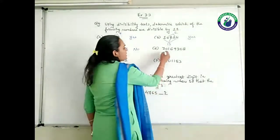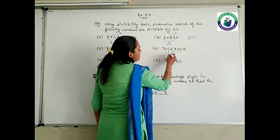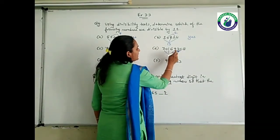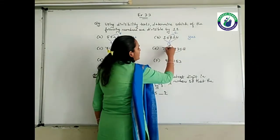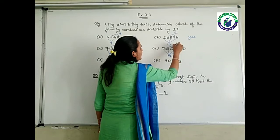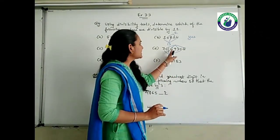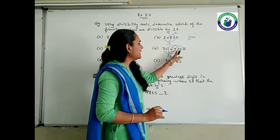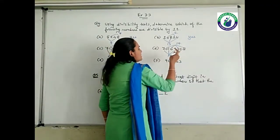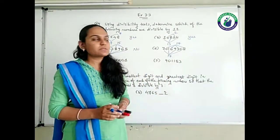Next one: 70169308. Odd places: 7 plus 1 is 8, 8 plus 9 is 17, plus 0 is 17. Even places: 0 plus 6 is 6, 6 plus 3 is 9, plus 8 is 17. The difference is 17 minus 17, which is 0. Yes, it is divisible by 11.